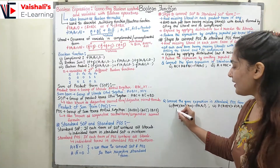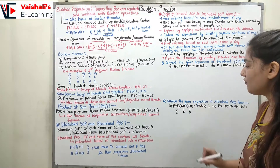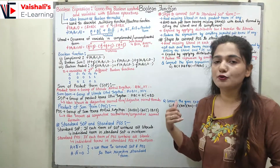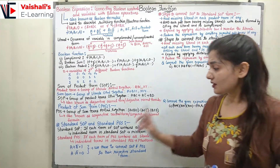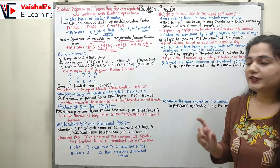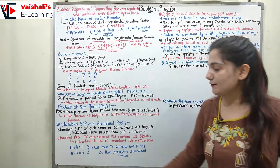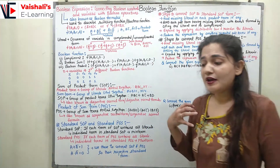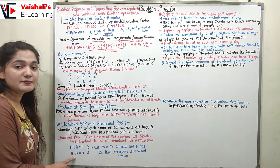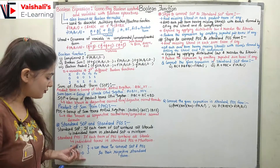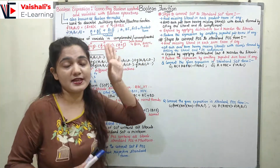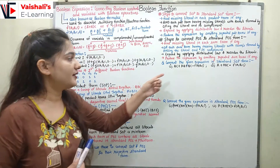For the standard POS, each term must also contain all literals. For example if a term is missing c, or missing a, or missing b, then it is not a standard POS form. Each individual term in the standard POS form is called a max term. For conversion, remember that a + a_bar = 1 and a · a_bar = 0. We use these two identities to convert SOP and POS to their respective standard forms.